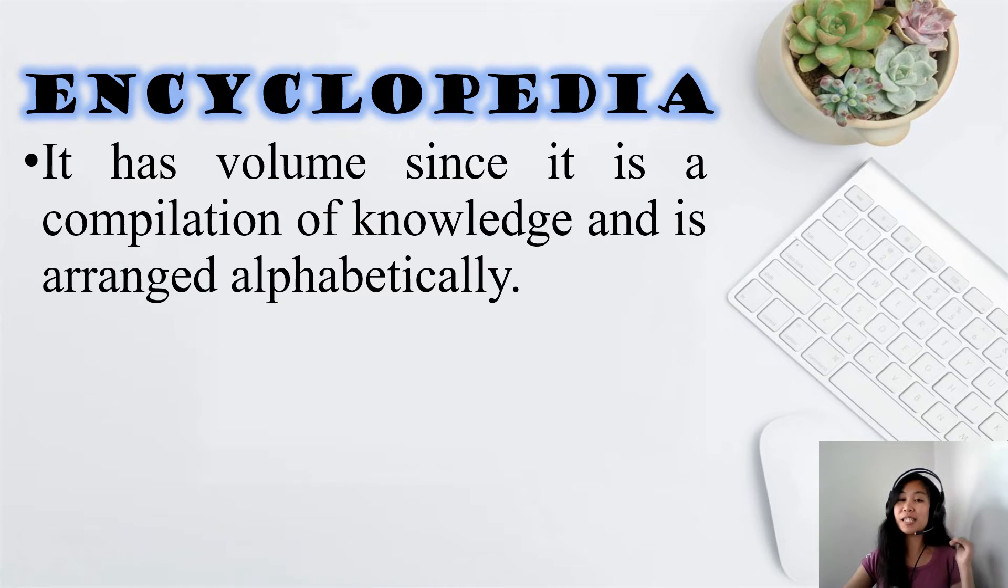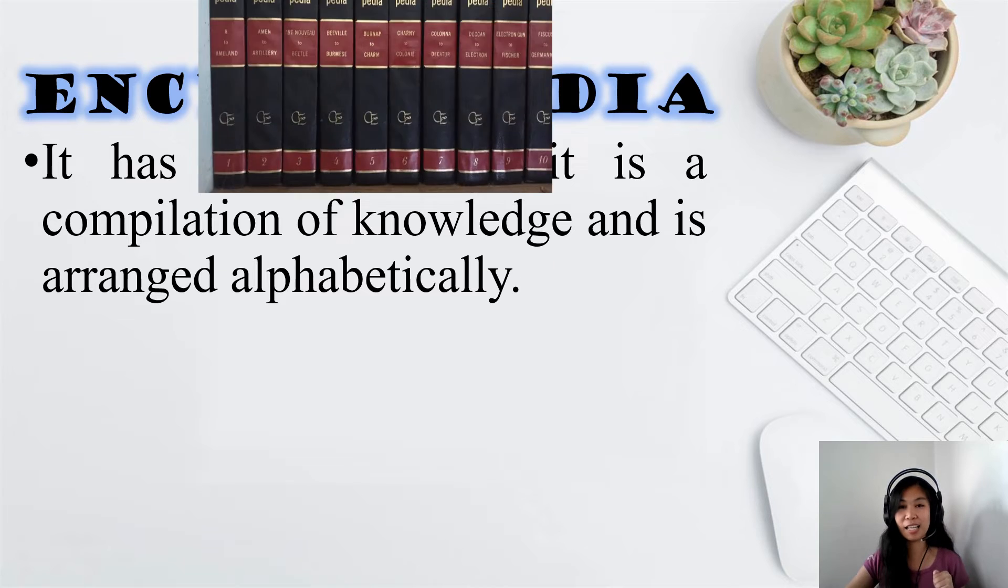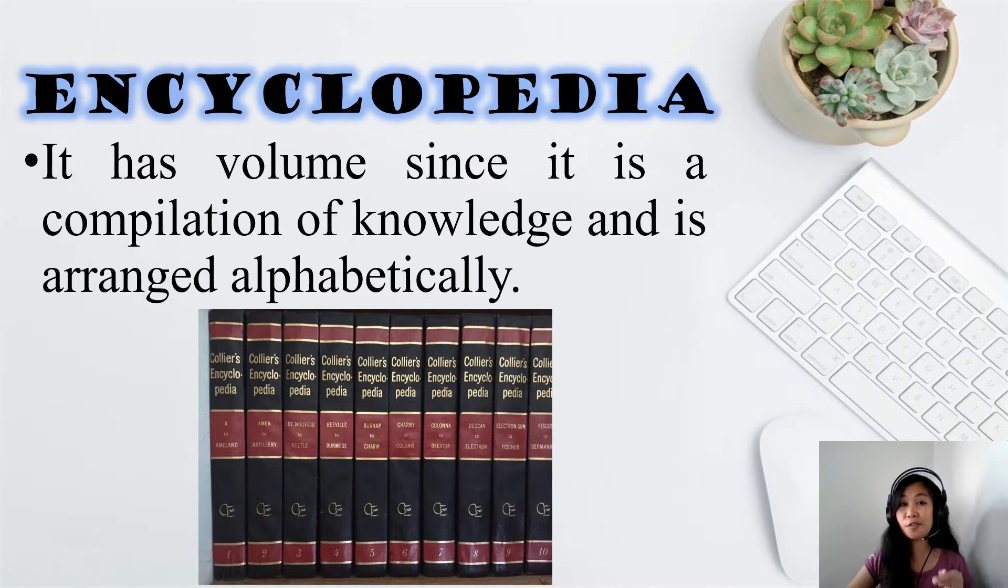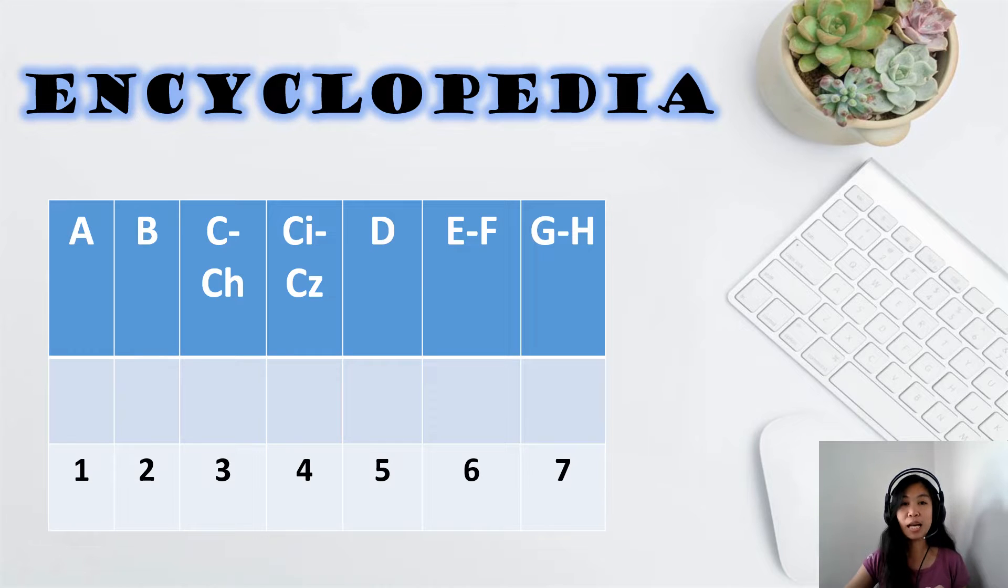It has volume since it is a compilation of knowledge and is arranged alphabetically. Here's an example of set of volumes of an encyclopedia. Usually there are only one letter per volume but as you can see in volume number 3 and volume number 4 the letter C has so much information in it that it has been split into two volumes.